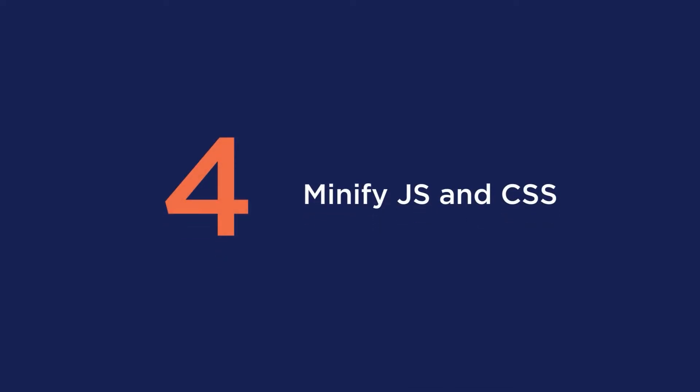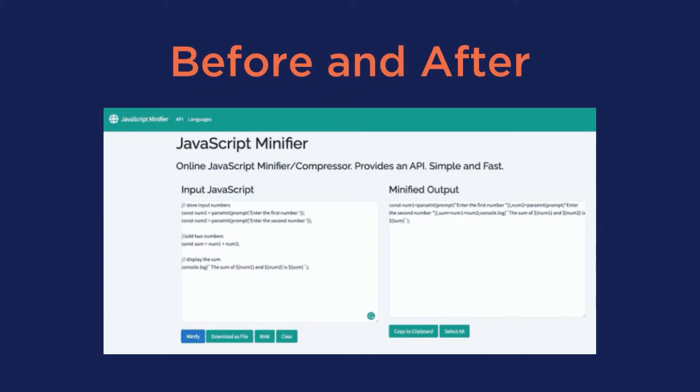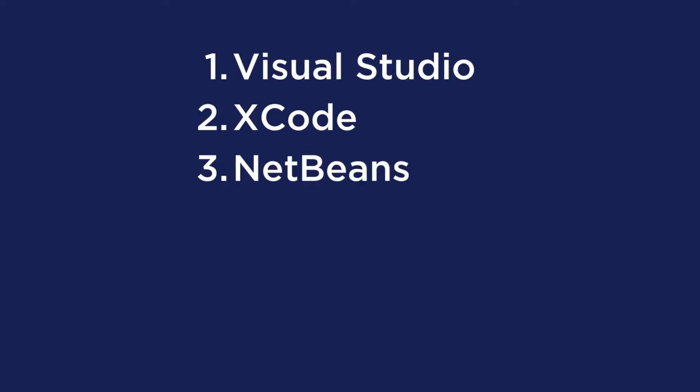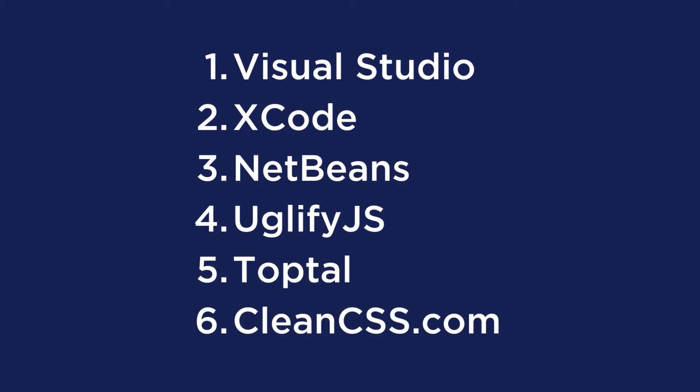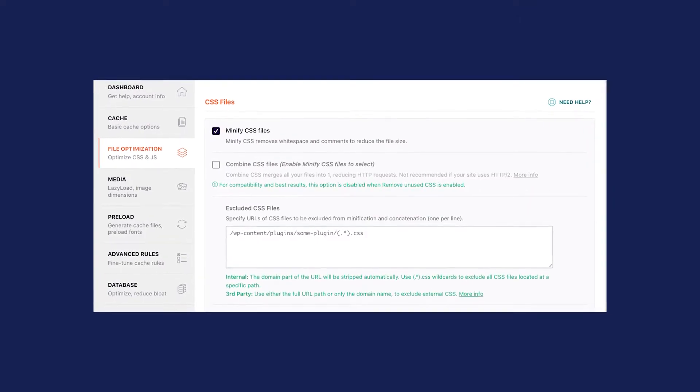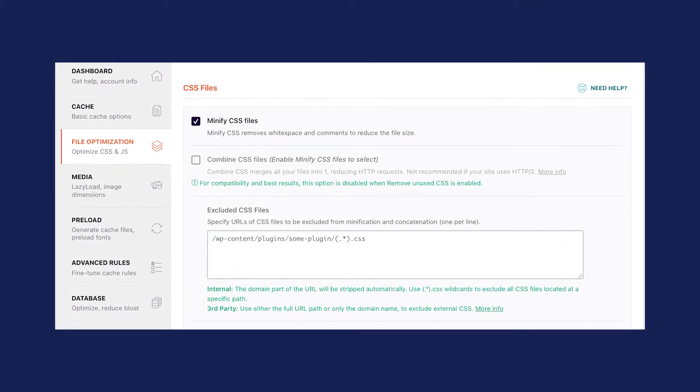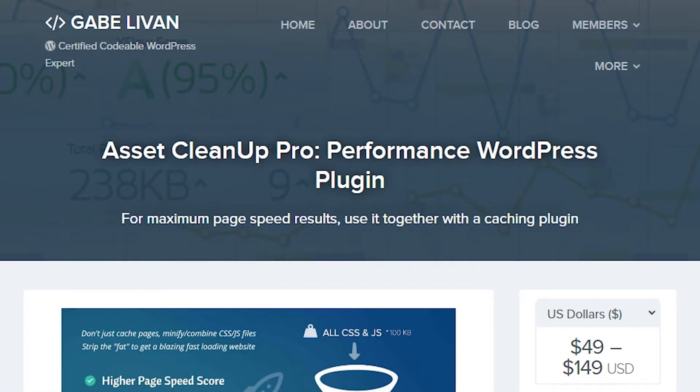Fourth is to minify JavaScript and CSS. Minification is the process of removing all unnecessary characters from CSS or JavaScript source code without changing its functionality. Tools you can use include Visual Studio, Xcode, NetBeans, UglifyJS, Toptal, or CleanCSS.com. Note that each tool has specific steps you'll need to follow. For the easiest solution, WP Rocket lets you minify multiple CSS and JavaScript files with just a few clicks. Other plugin alternatives include Asset Cleanup or Autoptimize.